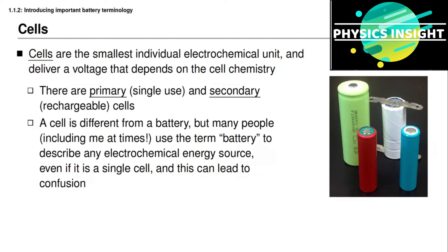If we're being technical and precise with our terminology, it is important to note that a cell is different from a battery. Technically, a battery comprises more than one cell somehow connected together. In common use, people use the terms cell and battery interchangeably. In this specialization, I will try to refer to the individual unit as a cell, or sometimes as a battery cell, and when referring to connected cells, I will call that a battery or a battery pack.